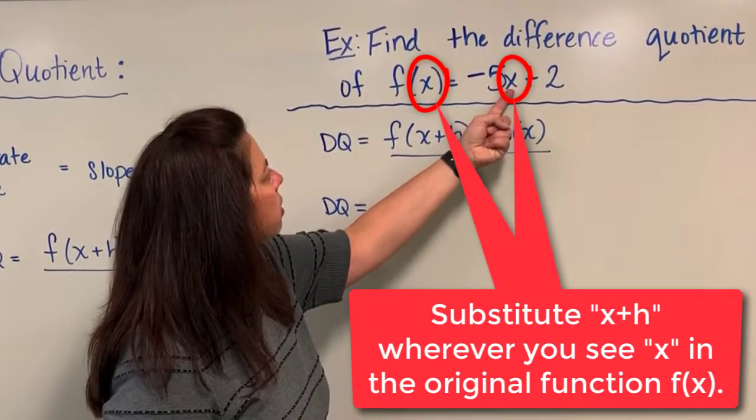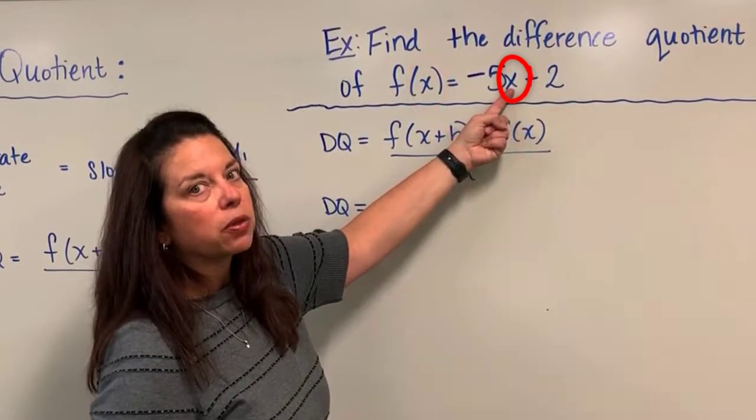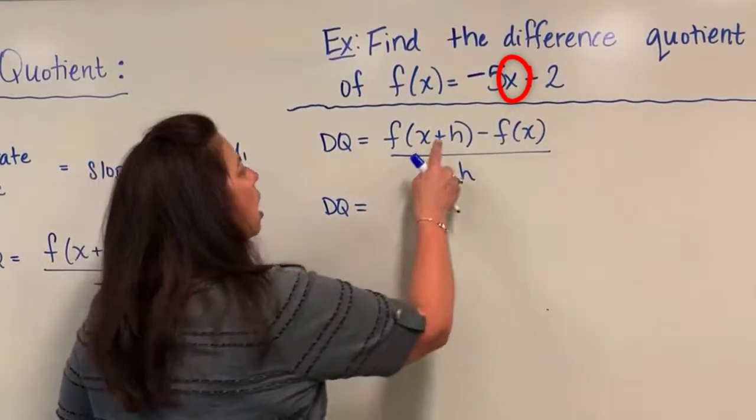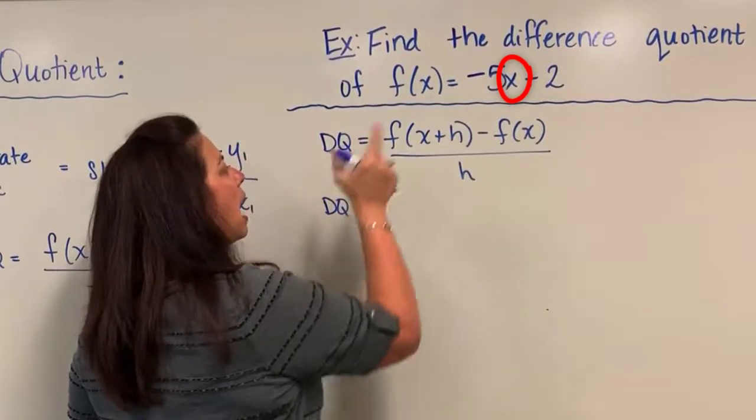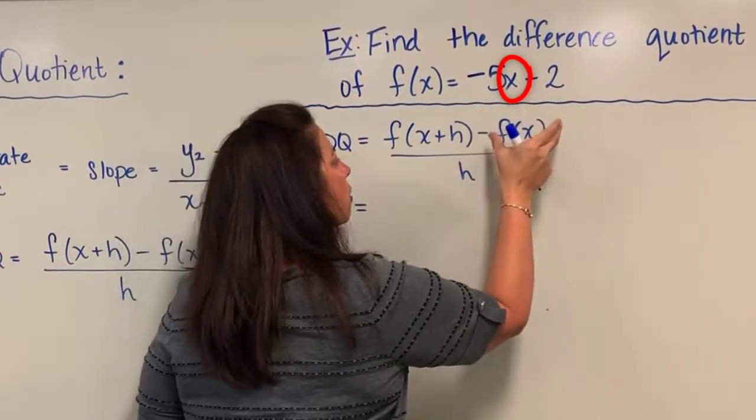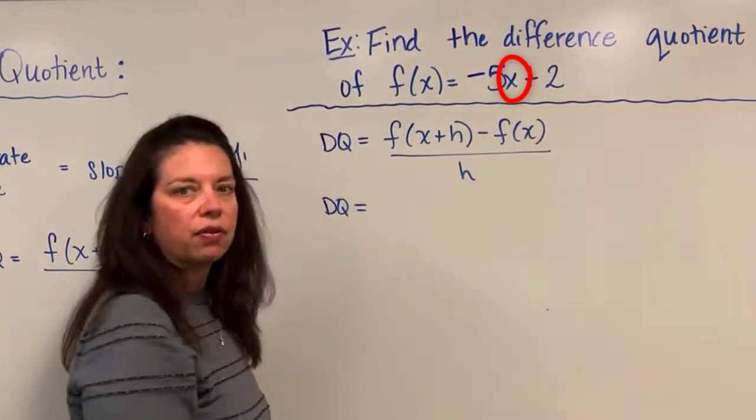So luckily here in this linear function we only have one place where that should be substituted in, the x plus h into this x right here, and then I'm supposed to subtract off the whole function again, the f of x part.